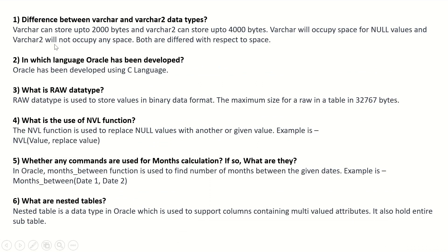First question: difference between VARCHAR and VARCHAR2 data types. VARCHAR can store up to 2000 bytes and VARCHAR2 can store up to 4000 bytes. VARCHAR will occupy space for null values and VARCHAR2 will not occupy any space. Both are different with respect to space.